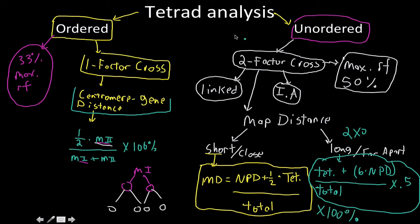To reiterate: tetrad analysis has ordered (one-factor) and unordered (two-factor). Ordered has a maximum 33% recombination frequency. Unordered has a maximum 50% recombination frequency. This can give us linked or independent assortment to determine map distances. If genes are close together, we use: non-parental dietype plus one-half times tetratype, divided by total.